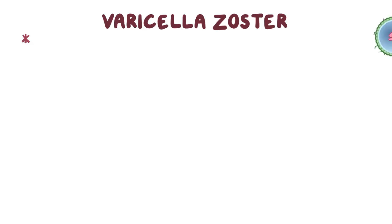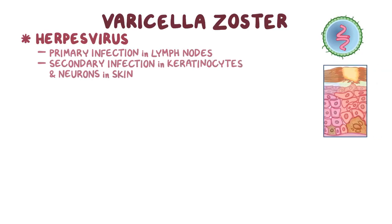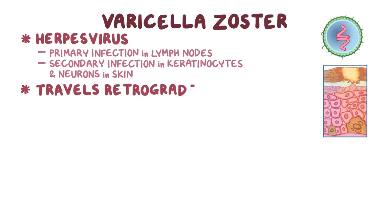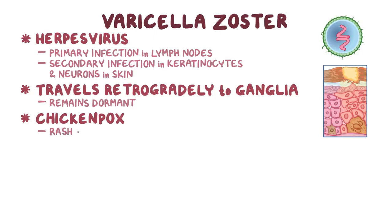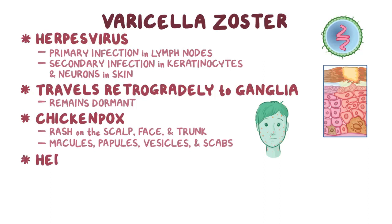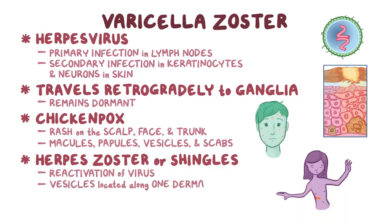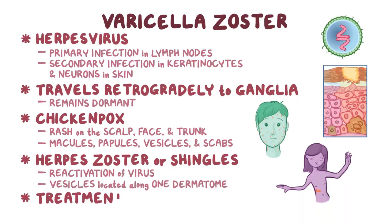As a quick recap: varicella zoster virus is a herpesvirus that causes primary infection in the lymph nodes and secondary infection in the keratinocytes and neurons in the skin. From the neurons in the skin, it travels retrogradely to the nerve ganglia, where it remains dormant. Chicken pox is characterized by a rash on the scalp, face, and trunk that contains macules, papules, vesicles, and scabs at the same time. Herpes zoster, or shingles, is caused by the reactivation of the virus, with vesicles located along one dermatome. Treatment is usually symptomatic and in some cases includes antiviral drugs.